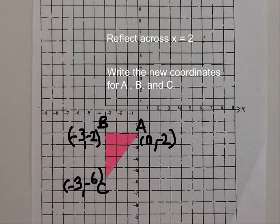Our last move we're going to do is a reflection. We're going to reflect across x equals 2. And then we're going to write the new coordinates for A, B, and C.